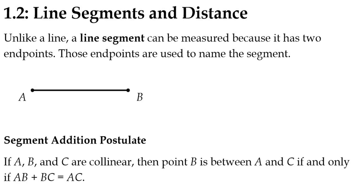Unlike a line, a line segment can be measured because it has two endpoints. Those endpoints are used to name the segment here. So if you look here at this segment, it's bound by the endpoints A, B, A and B.